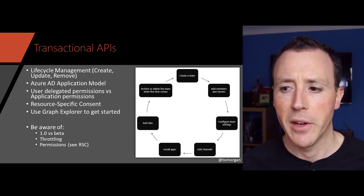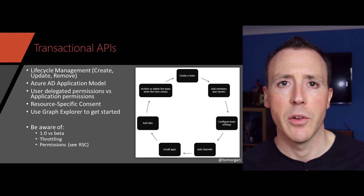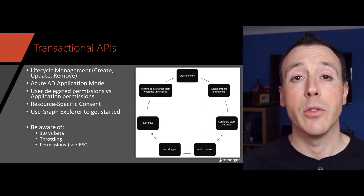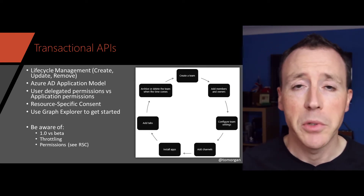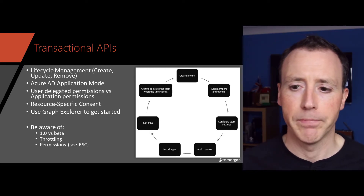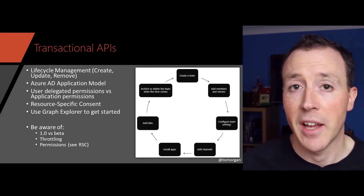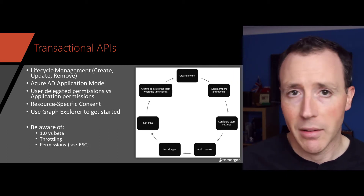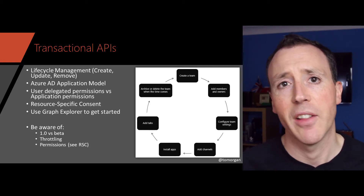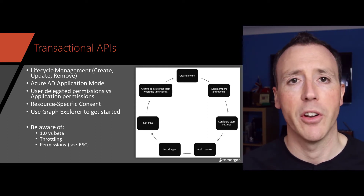The three big areas I'm going to talk about are Microsoft Graph APIs, the Teams UI and experience, and also bots. Microsoft Graph APIs are really the transactional APIs — lifecycle management. It's the way you create Teams, update them, delete them, and gather information about them. This is all done using an Azure AD application model, so it's very familiar — exactly the same as the rest of Graph, a common methodology.